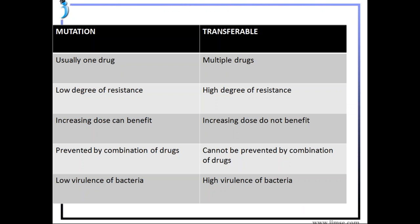An important short note in this chapter is the differences between mutational and transferable drug resistance. Mutational resistance involves a single drug, has a low degree of resistance, may respond to increased dosage, can be prevented by combination drugs, and leads to low virulence. Transferable drug resistance, in contrast, arises through conjugation, transformation, or transduction; involves multiple drugs; has a high degree of resistance; does not respond to increased dosage; cannot be prevented by combination drugs; and the bacteria usually show high virulence.